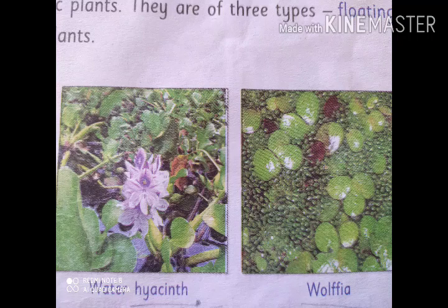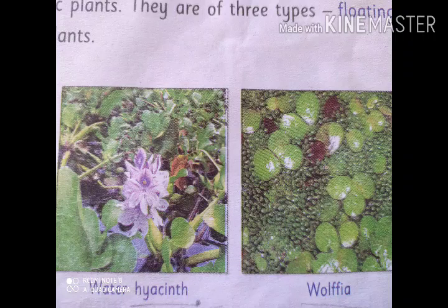Water hyacinth and wolffia are examples of floating plants. Floating plants have spongy bodies that are filled with air which makes them light. Duck wheat and wolffia are some floating aquatic plants. Their stems are hollow and leaves are free to float on the water.